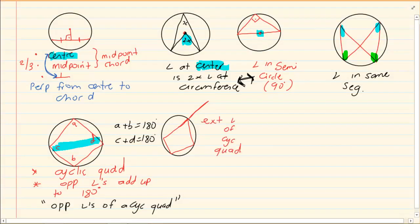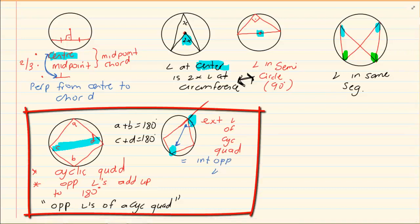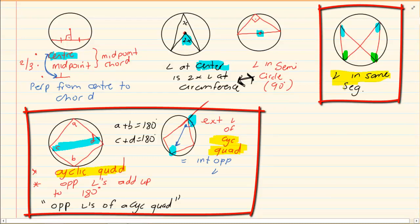The next one is the exterior angle of a cyclic quad. The outside angle is equal to the interior opposite. It means jumping in and then going opposite — the exterior angle of a cyclic quad is equal to the interior opposite angle. These two theorems are specifically linked to cyclic quads. Angles in the same segment can also be used to prove that something is a cyclic quad, so there are three theorems regarding cyclic quads.